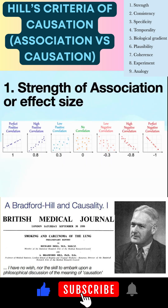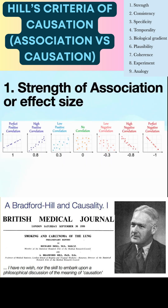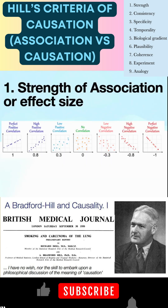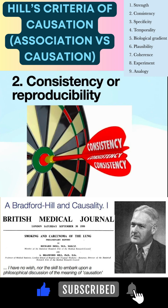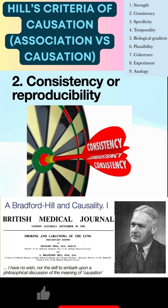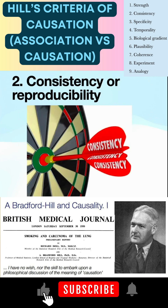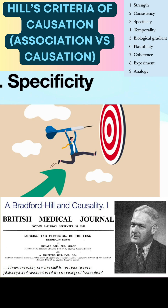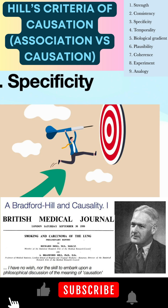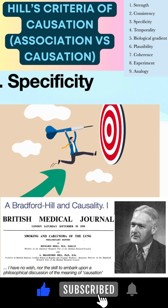A higher strength of association or effect size between exposure and outcome. Consistency or reproducibility observed in different studies, populations and circumstances. Specificity: exposure is associated with a specific outcome and the outcome is not linked to multiple exposures.